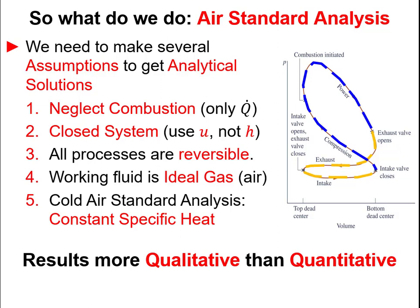To get a good analytical or hand-calculation analysis, we make a series of assumptions. First, we neglect combustion — we assume heat is transferred in and out but ignore chemical changes. We assume the system is always closed, so we use the closed versions of the first and second law, meaning we use specific internal energy rather than specific enthalpy. We assume all processes are reversible or ideal, and that the working fluid is an ideal gas, typically air.